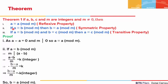The second property says: if a is congruent to b mod of m, then b is congruent to a. This is the symmetric property. And the third property states: if a is congruent to b modulus of m, and b in turn is congruent to c mod of m, then a will be congruent to c mod of m. This is the transitive property.